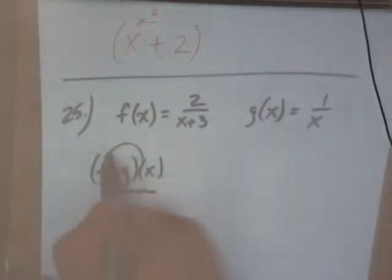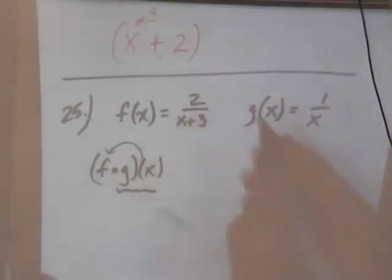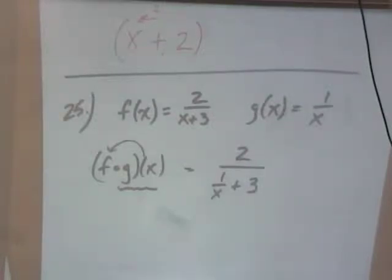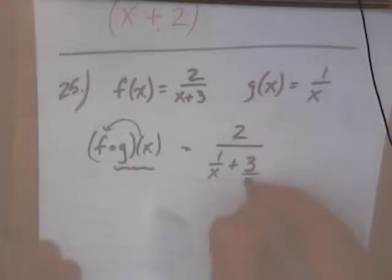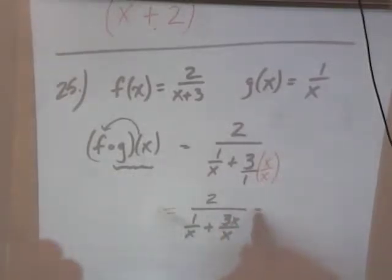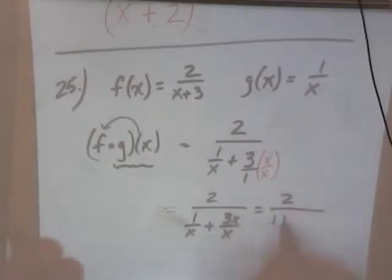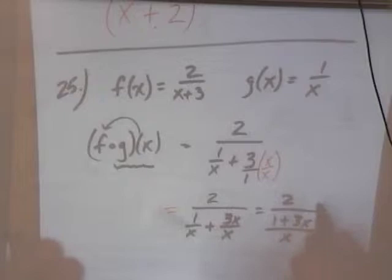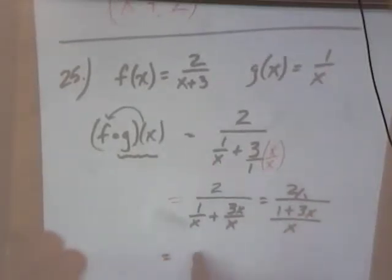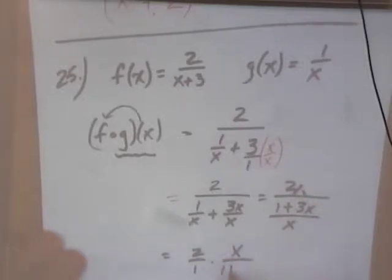I'm going to take this and plug it into here. So that's going to be 2 over 1 over x plus 3. Let's try to clean that up a little bit. In order to add or subtract fractions, I need common denominators. So I'm going to multiply this by x over x. So that's going to give me 2 over 1 over x plus 3x over x. So now I'm going to combine those two. So it's 2 over 1 plus 3x over x. And now I've got a fraction divided by a fraction. What's the rule? We're going to multiply by the reciprocal. So it's going to be 2 over 1 times x over 1 plus 3x. So that's 2x over 1 plus 3x.